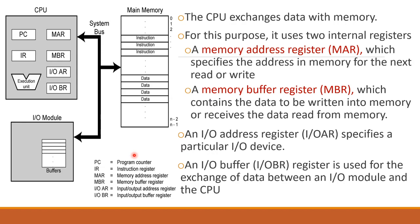The CPU exchanges data with memory. For this purpose, it uses two internal registers. The first is the Memory Address Register (MAR) — the address register stores the next address, which specifies the address in memory for the next read or write. The next is the Memory Buffer Register (MBR) — the buffer register holds data to be written into memory and receives the data read from memory. So when writing to memory, the data goes through the MBR, and the address is stored in the MAR.